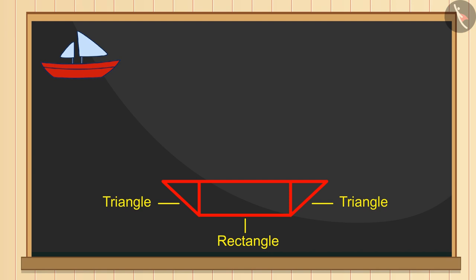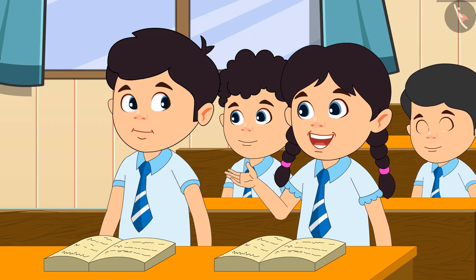Now we will draw a line to make its upper part and will make a big triangle on its left side and a small triangle on its right side. How do you find my boat?